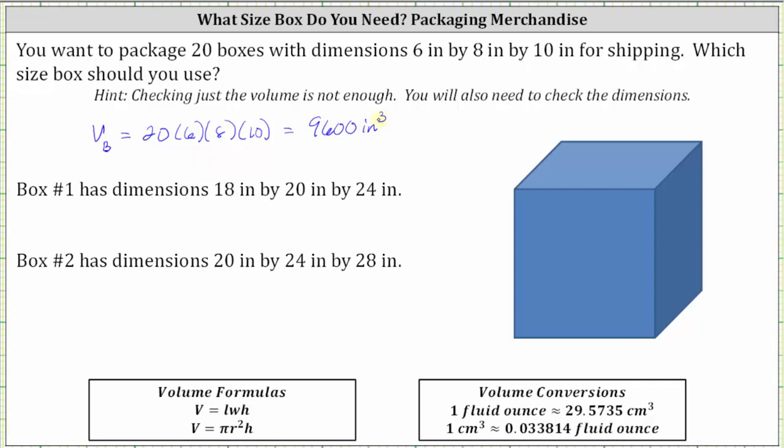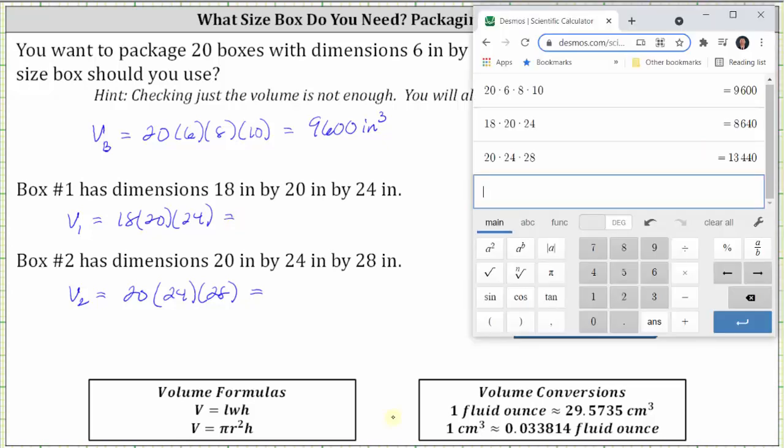And now let's determine the volume of box one and box two. V_1, the volume of box one, is equal to 18 inches times 20 inches times 24 inches. V_2, the volume of box two, is equal to 20 inches times 24 inches times 28 inches. And now let's go to the calculator. V_1 is equal to 8,640 cubic inches. V_2 is equal to 13,440 cubic inches.